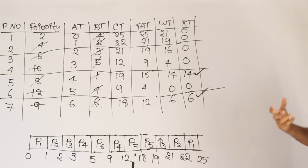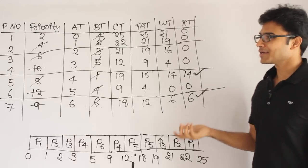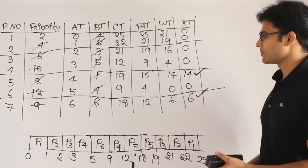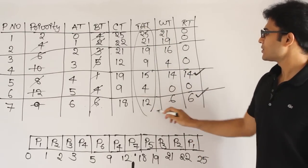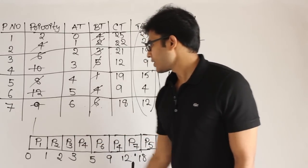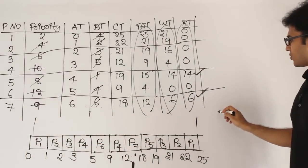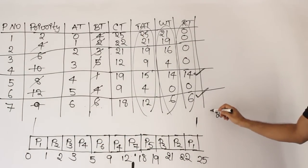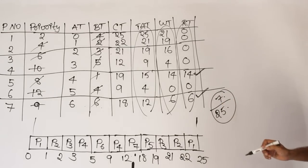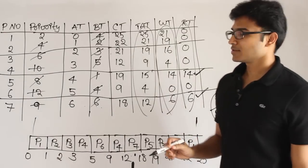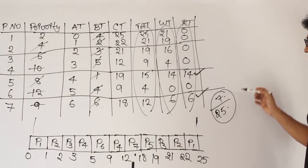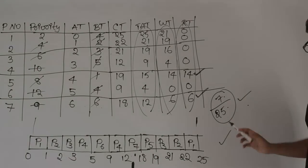Even if you didn't fully follow the theory, if you understood the method of how to solve it, that is sufficient — they will not ask for so much depth. Now for throughput: we started at 0 and finished at 25, so total schedule length is 25. In those 25 units, 7 processes were completed. Therefore throughput is 7/25 processes per unit time.